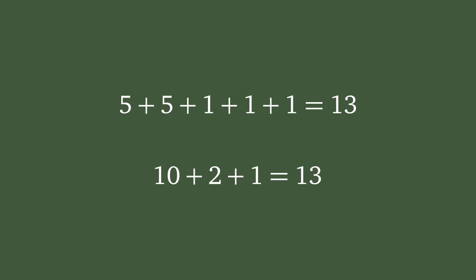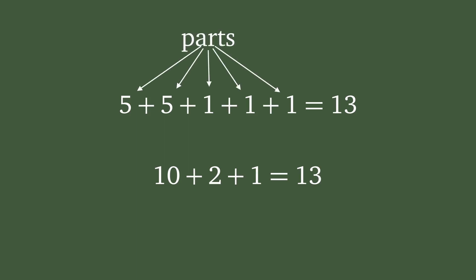Whenever we write an integer — in this case 13 — as a sum of positive integers that are weakly decreasing, so repetitions are allowed but not getting larger, we speak of an integer partition, and call the summands parts.